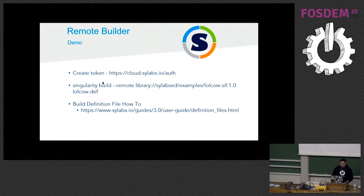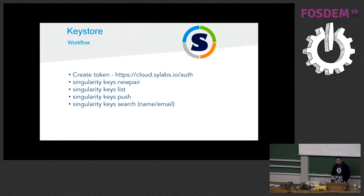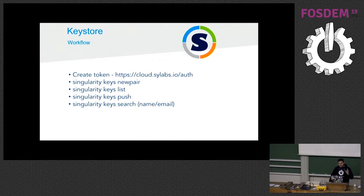For doing this, you do need one UI step, which is creating a token — you need to go to the web page and create your token. For the key store, this is how users can interact with it from the CLI. If you don't have a key pair already on your host, Singularity will talk with the PGP protocol already on your host and create keys for you. You can list keys, have several keys — not just one — stored in the Singularity key folder, push them, and also search keys just as you can search for images.